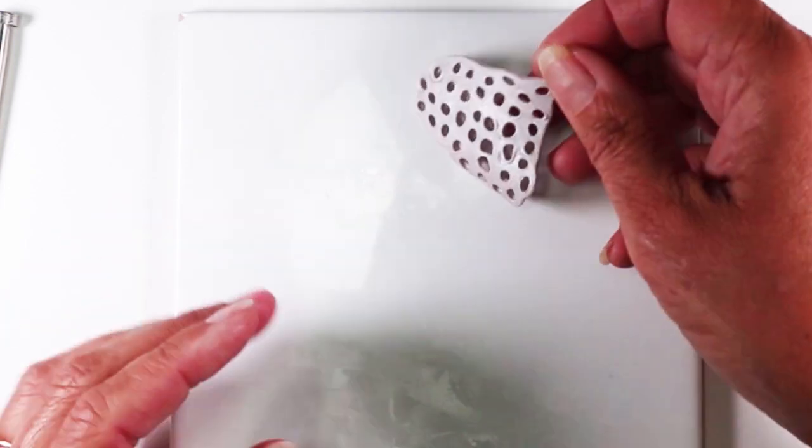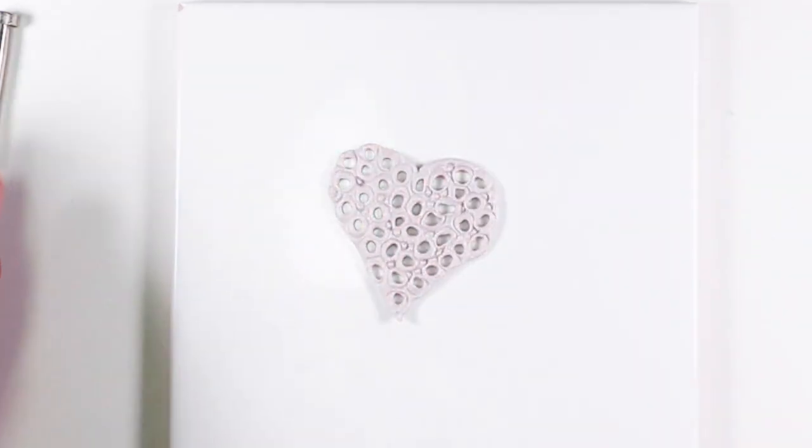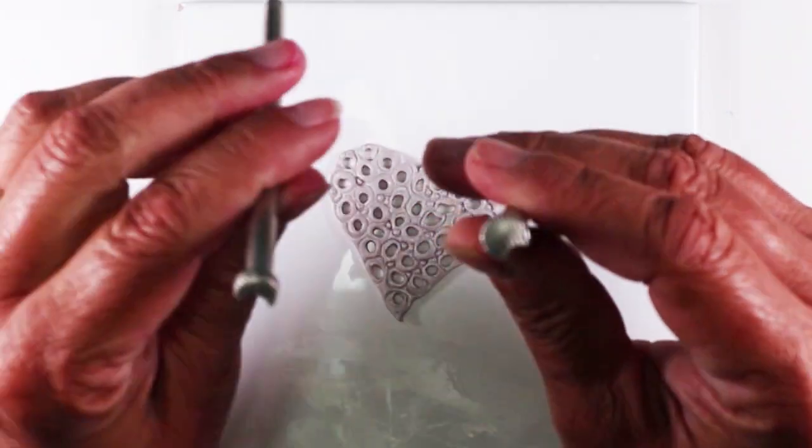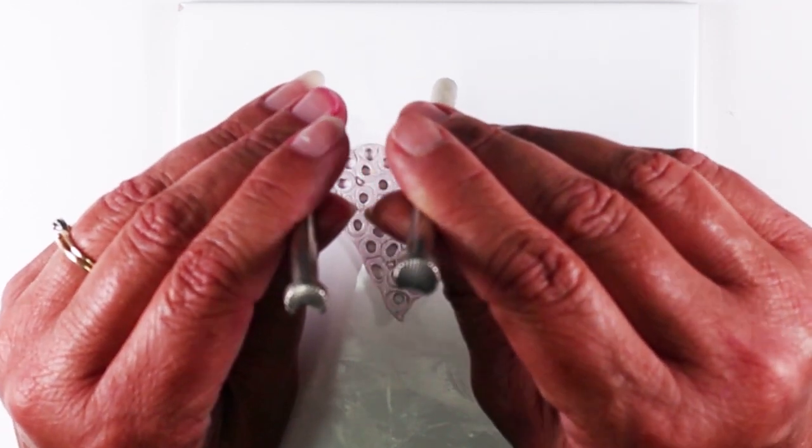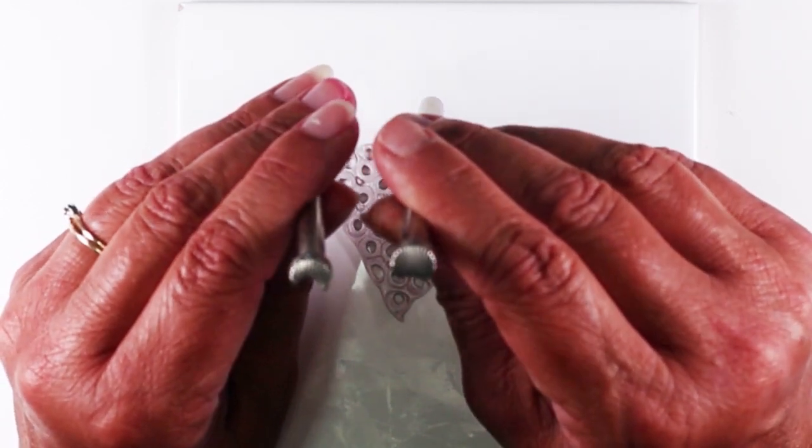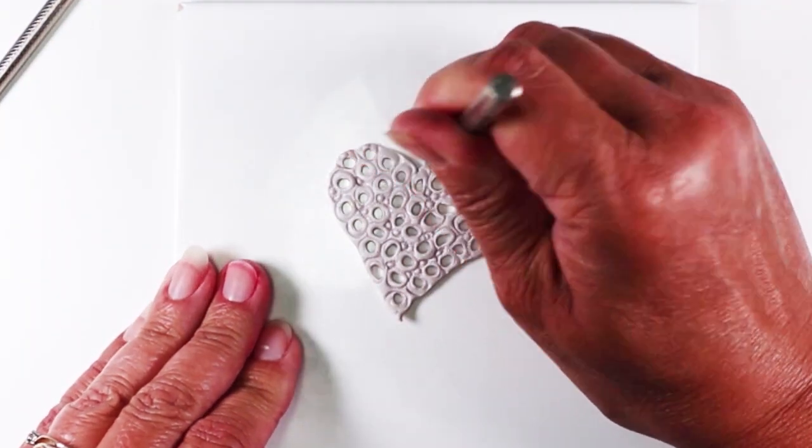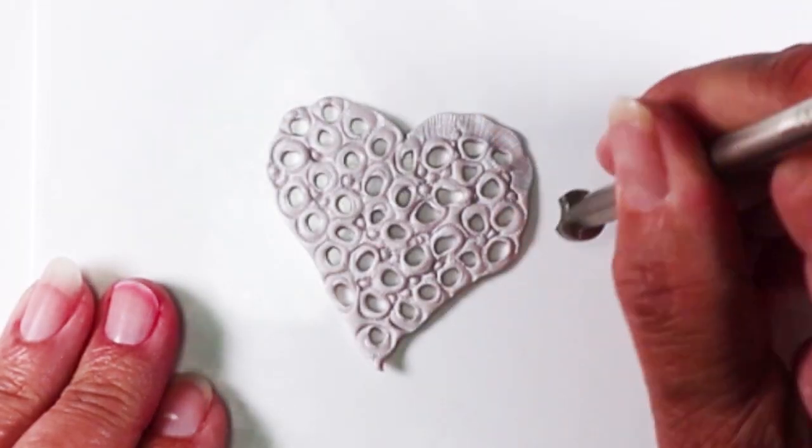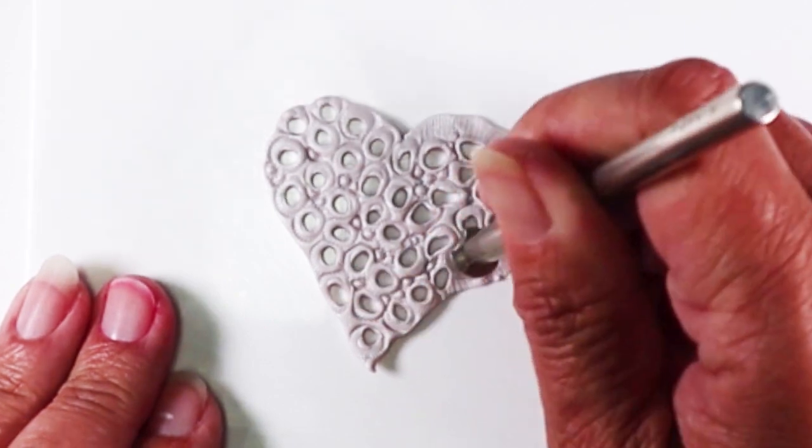Now that I have the back side all smoothed out, we can deal with the edges if you want. This step is optional, but I really like the look. What I love to use are either of these two stamps from the leather stamping set. I just love the edge that it gets. You just press it around the edge and those lines just add so much.